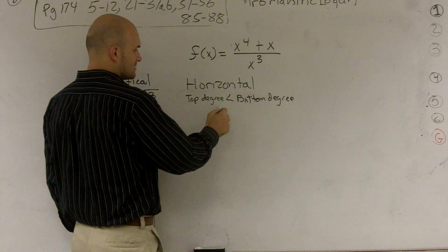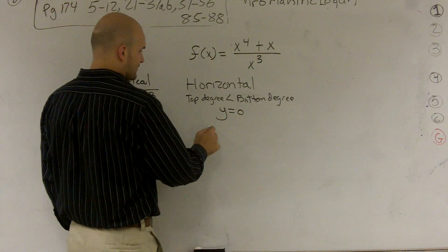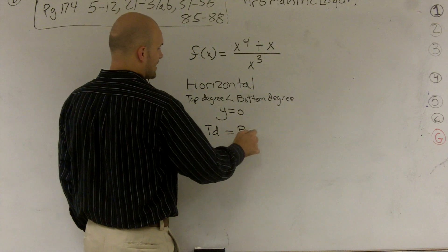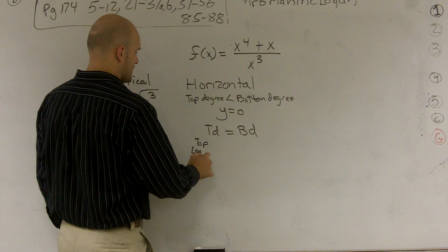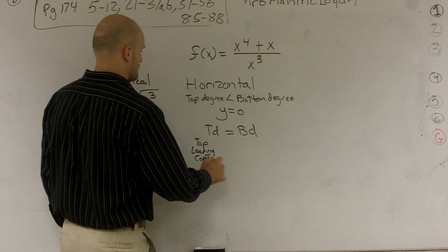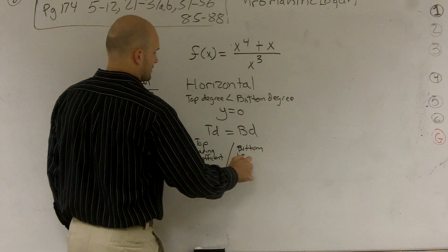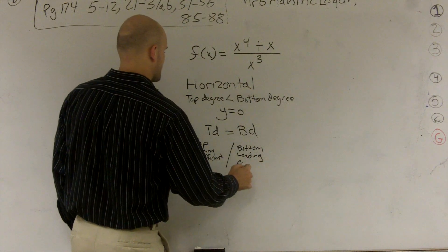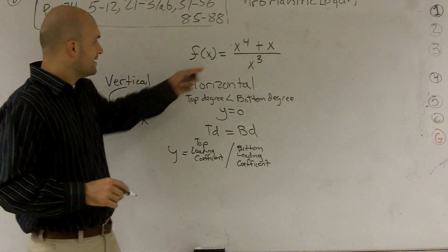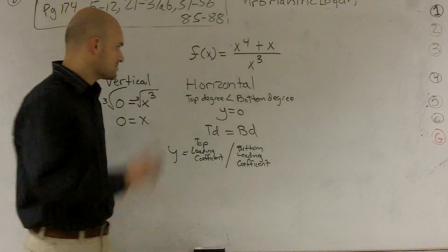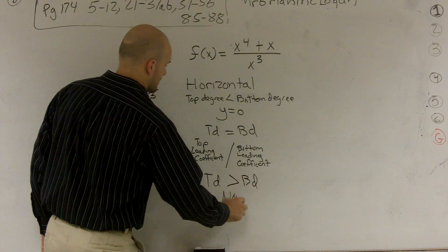Then your horizontal asymptote is y equals 0, all right? If your top degree is equal to your bottom degree, then your top leading coefficient divided by your bottom leading coefficient is your horizontal asymptote. Here, they're not equal to each other, right? So the last one is when it's greater than, there's none.